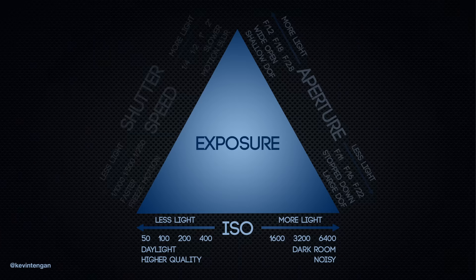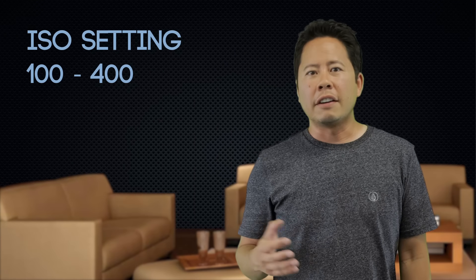Let's start with ISO. The ISO controls your camera's sensitivity to light. A lower ISO will decrease its sensitivity, while a higher ISO will increase its sensitivity. When shooting in a dark environment such as indoors, you would generally use a higher ISO. However, higher ISOs do tend to introduce noise into your image. For real estate photographs, we want the image to be as clean as possible, and for that reason I'll generally set my ISO between 100 and 400.